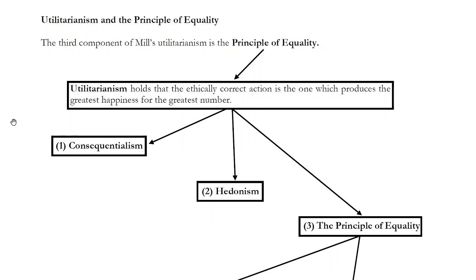We won't spend too much time on consequentialism this week, but next week we will be diving into it in some detail and discussing it in tandem with the issue of euthanasia. We also discussed in previous videos Mill's hedonism — the idea that what makes a human life go well, what constitutes our happiness, is pleasure and the absence of pain.